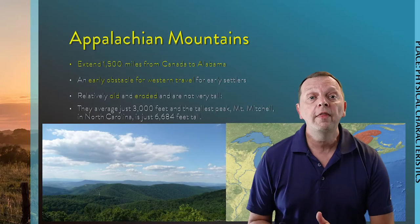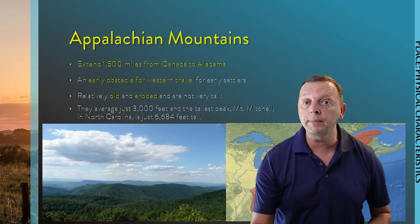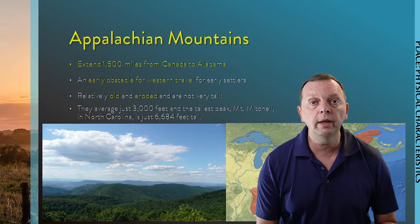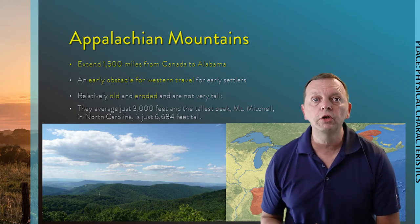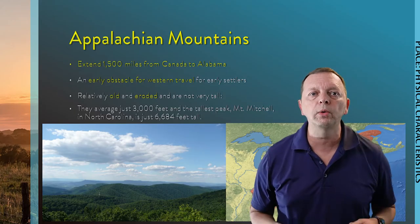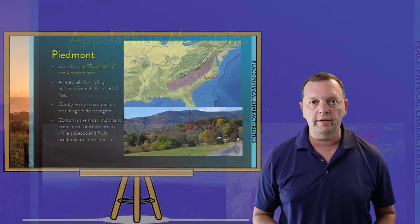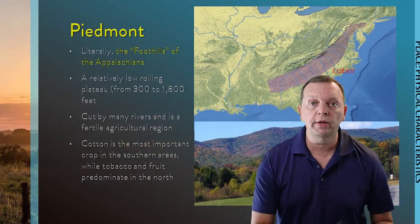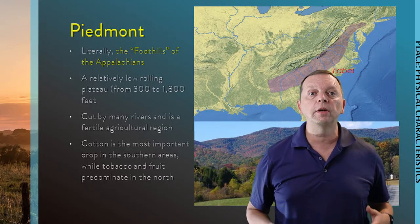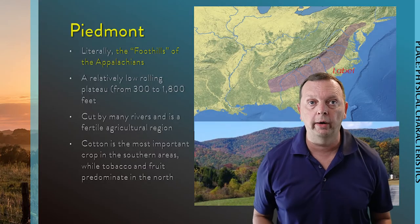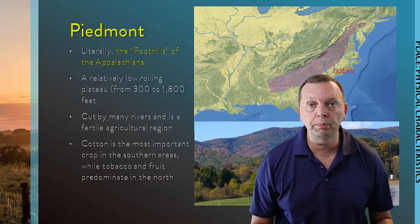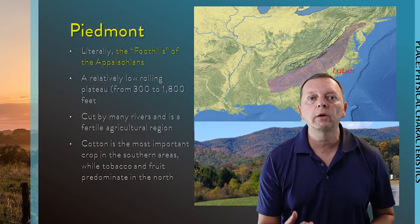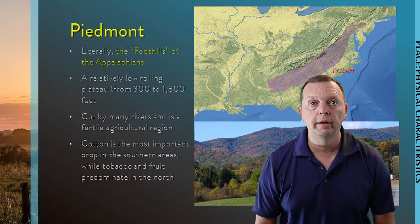Despite not being very tall, the Appalachians did form an obstacle for settlers moving west. Between the Coastal Plain and the Appalachians, we find what is known as the Piedmont, which literally is the foothills of the Appalachians. The Piedmont is a low rolling plateau with several rivers that cut through it, making the region a fertile agricultural area. Cotton was plentiful in the southern portions of the Piedmont, and in the northern Piedmont, tobacco and fruit were raised very abundantly.